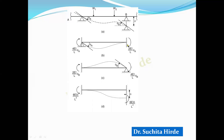Next, we will see the effect of sinking of support. Because of sinking of support, moments develop equal to 6EI×delta/L². If the right support sinks, then to maintain slope zero at both ends, the moments required are anticlockwise. The magnitude of this moment due to sinking of support is 6EI×delta/L².